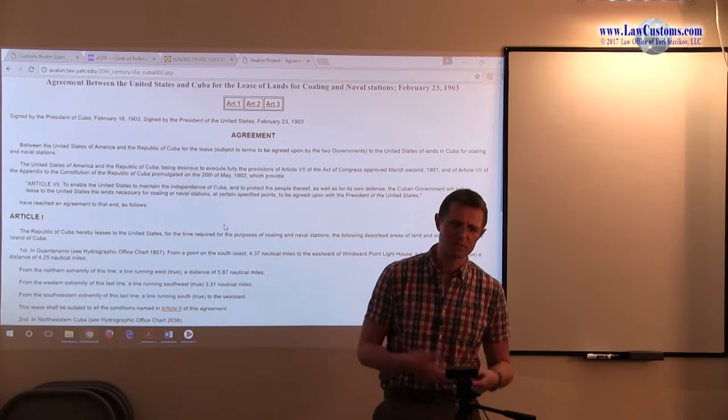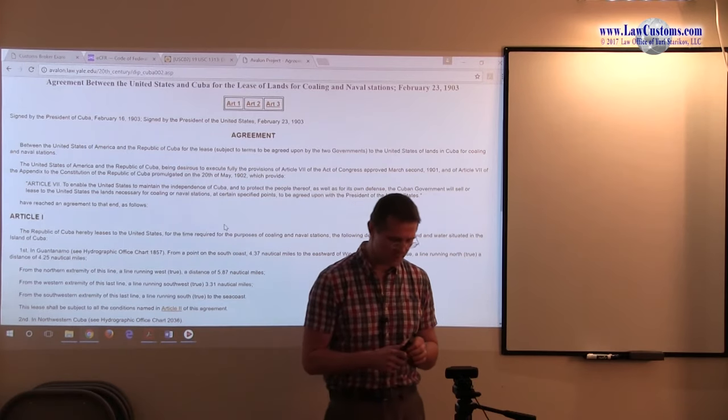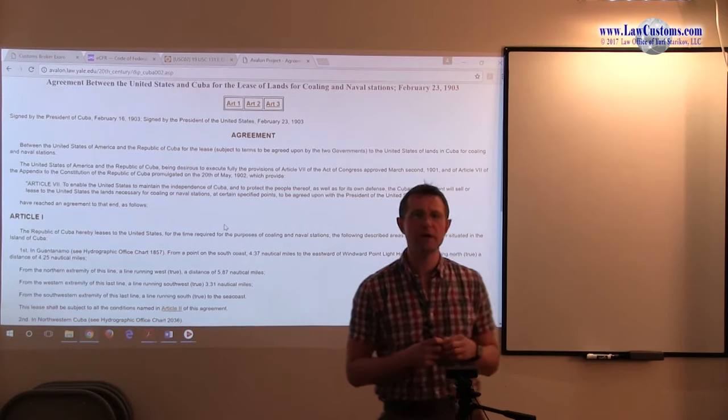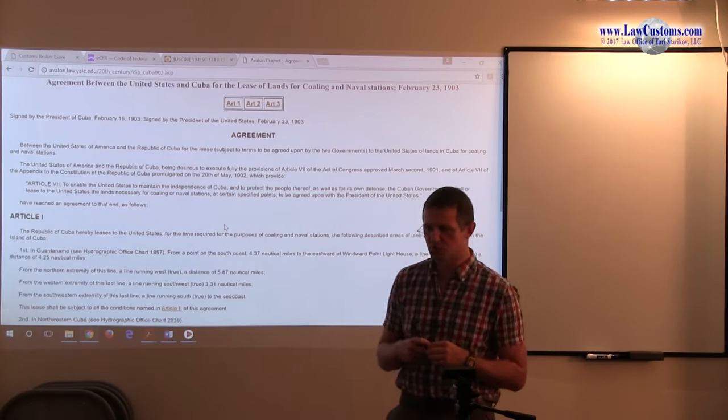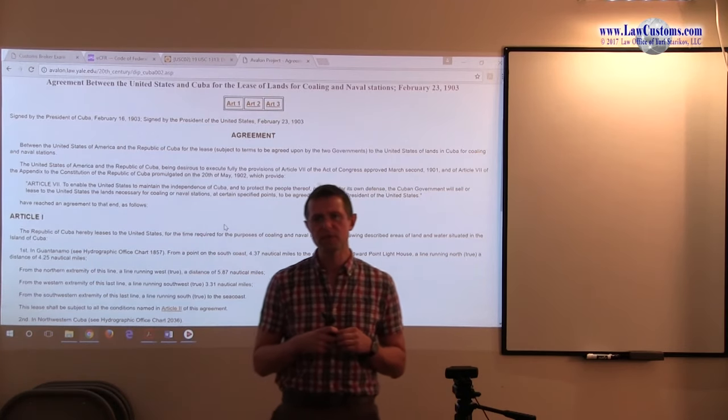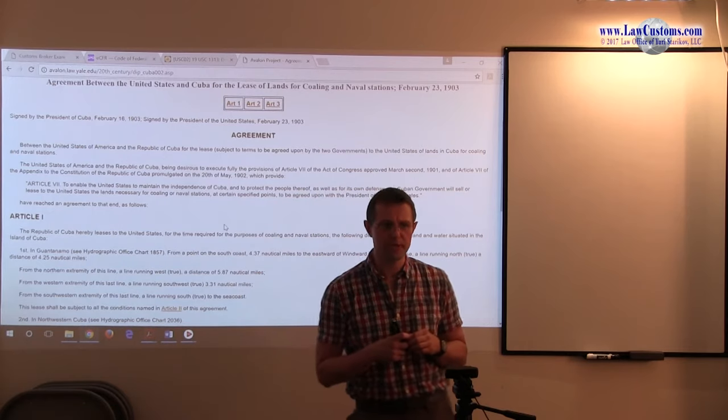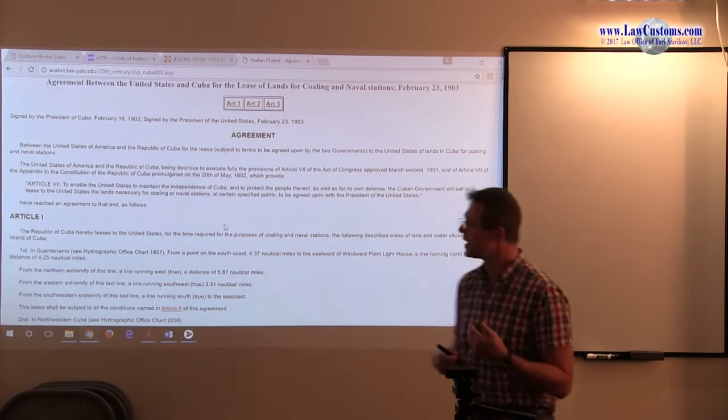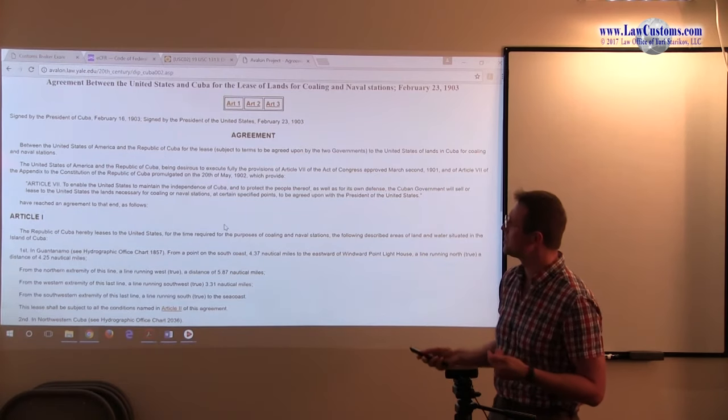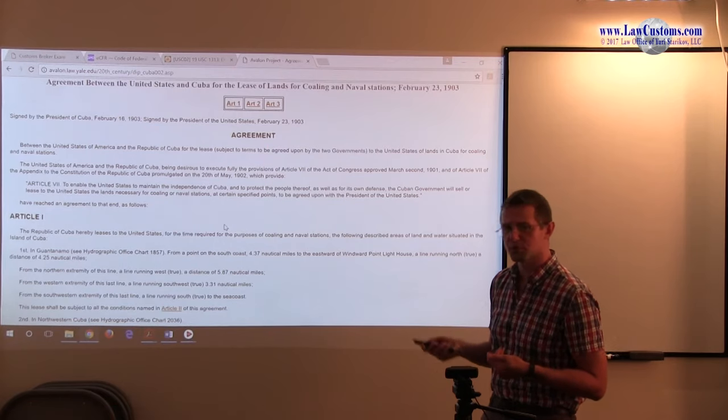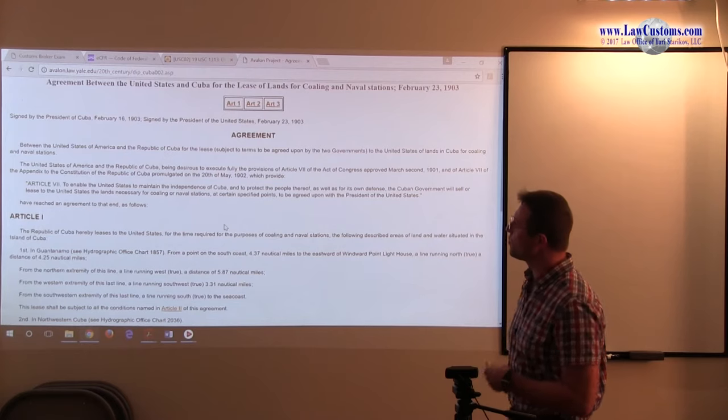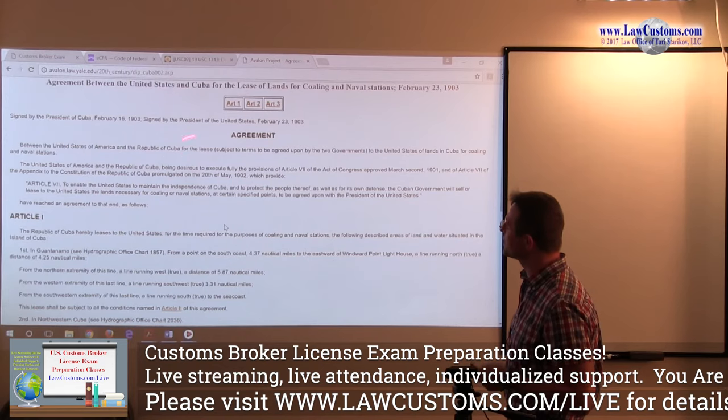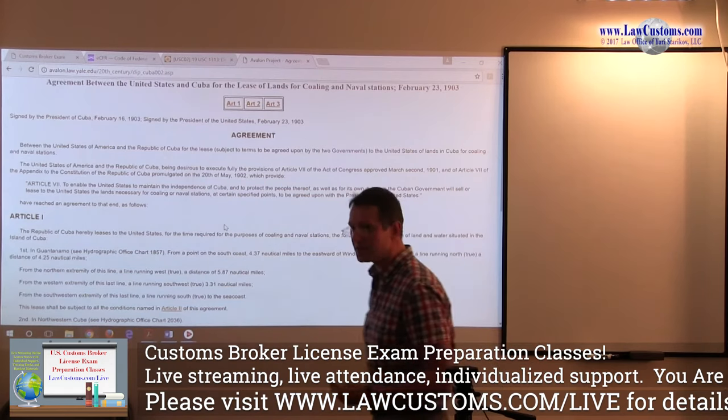As the United States was asserting its influence over various domains in the Western Hemisphere, it became very active in Cuba as well. It stationed its troops in the late 19th century, and by the turn of the century, specifically 1903, there was an agreement between the president of Cuba and the United States where for an undefined period, the United States and Republic of Cuba agreed to have Guantanamo Bay released to the United States.